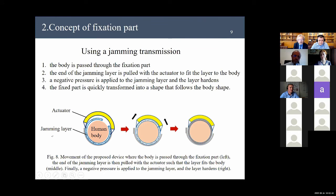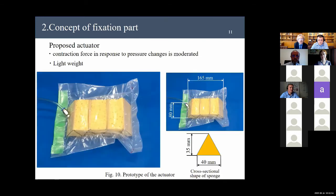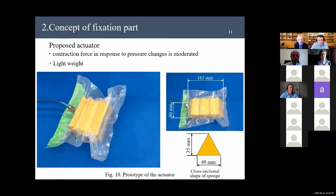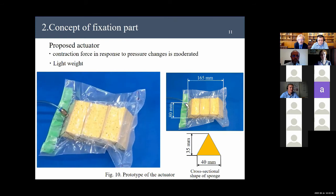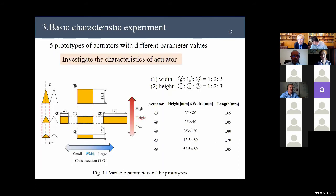Next slide, I'll explain the actuator part. Figure 9 is the principle of the proposed actuator for fixation. The actuator is composed of zigzag-shaped skeleton and sponge, and it contracts when it is folded by negative pressure. It is characterized by high shrinkage and flexibility to handle the surface and light weight. Therefore, we propose the actuator shown in Figure 10. The change in the contraction force in response to pressure change is moderated by inserting the sponge between the folded structures.